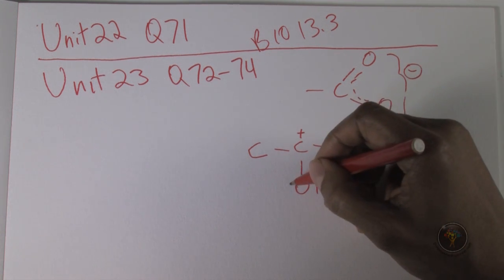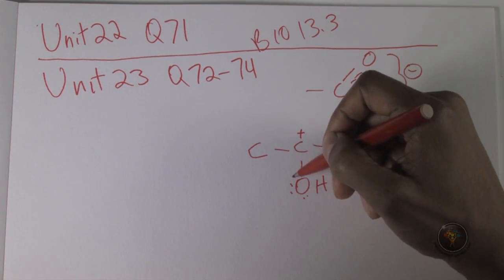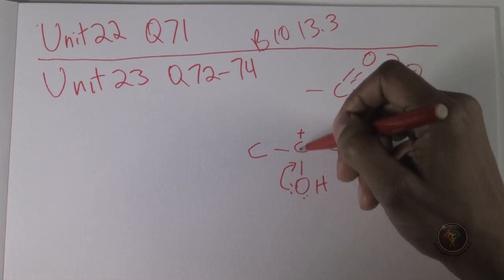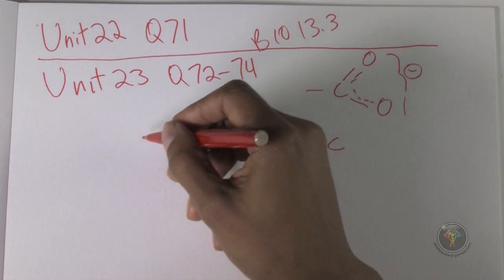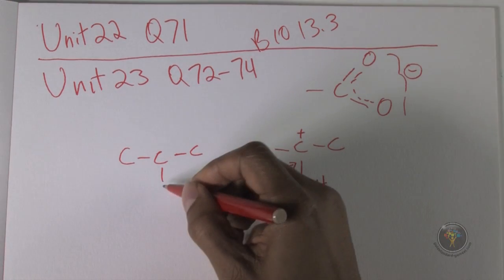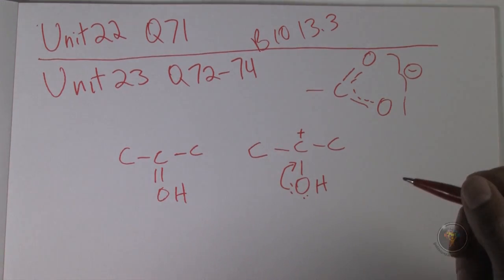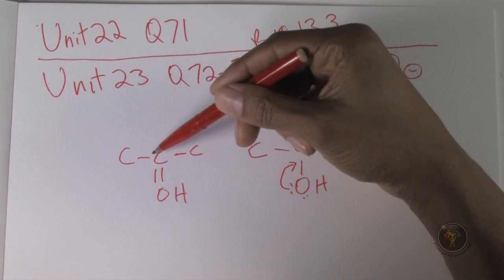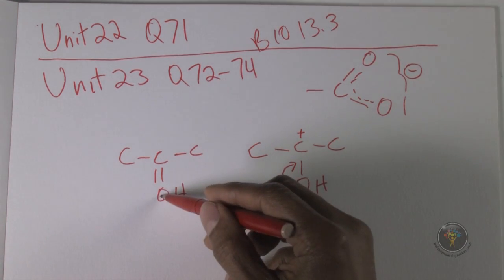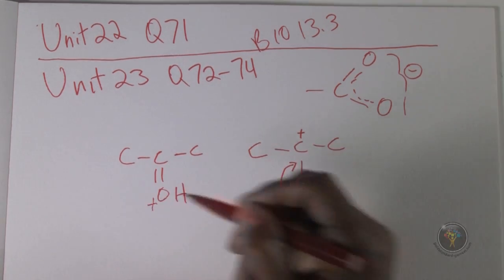When we look at this, there are electrons on this oxygen that would be attracted to that positive charge. So we can imagine those electrons being attracted to that positive charge. If those electrons were to move in such a way, then you would have a double bond with the carbon. The carbon would have four bonds, so now it's neutral. And the oxygen gave up its electrons to make this bond, and so it would have a positive charge. So now these are fairly written as resonant structures.